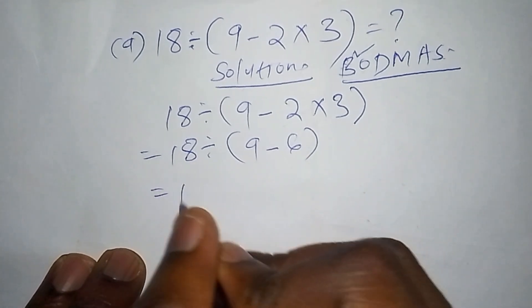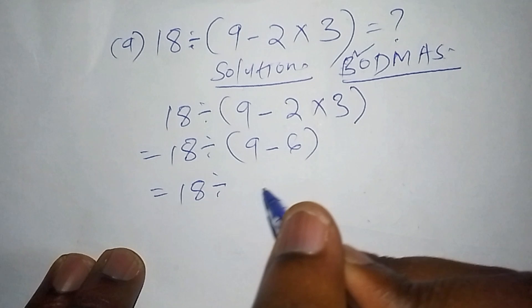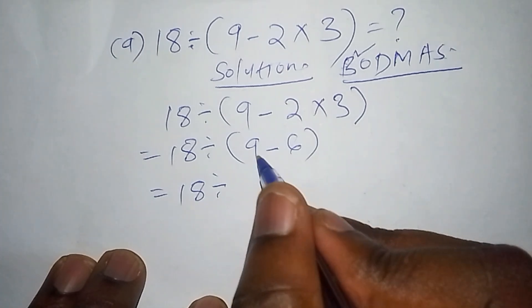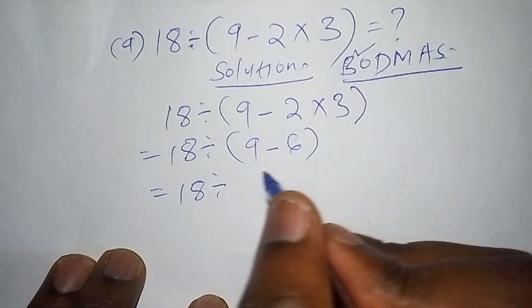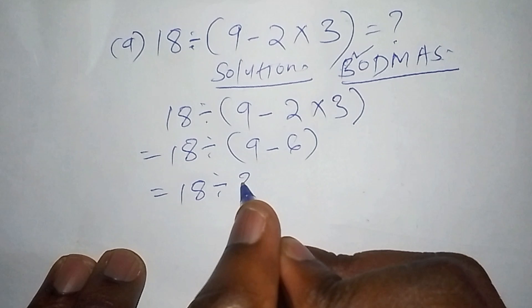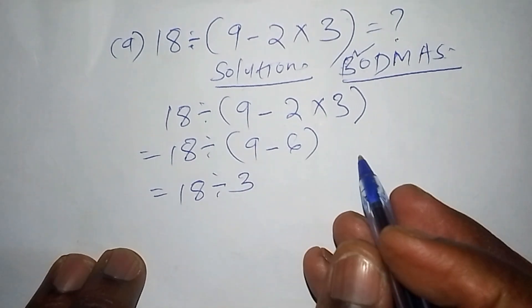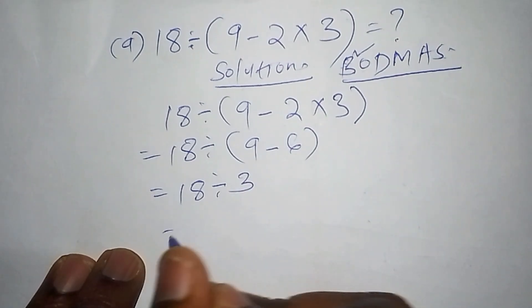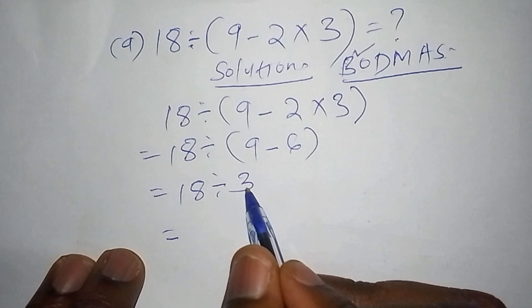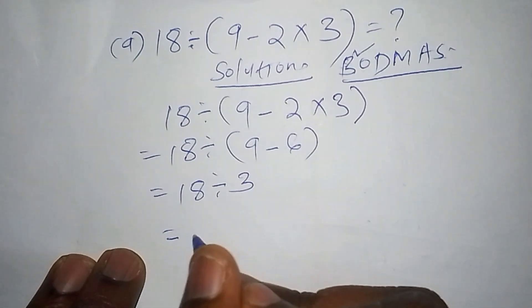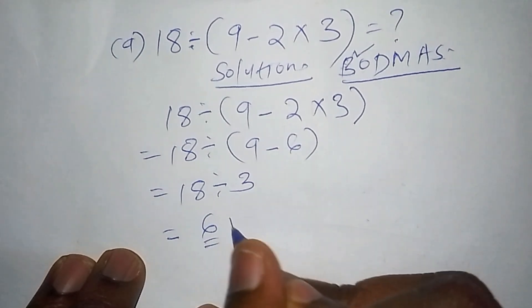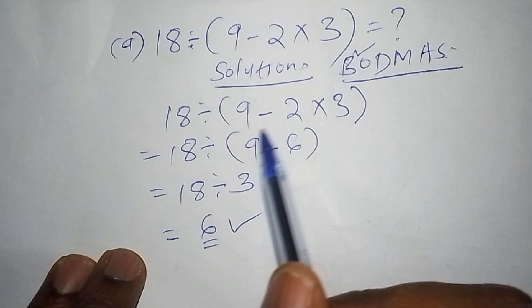Here we shall have 18 divide by. Now the number inside the bracket is 9 minus 6, and 9 minus 6 is 3. So as we conclude, we shall say that 18 divide by 3, that is 6. So now 6 becomes the correct answer by just following the correct order of operation.